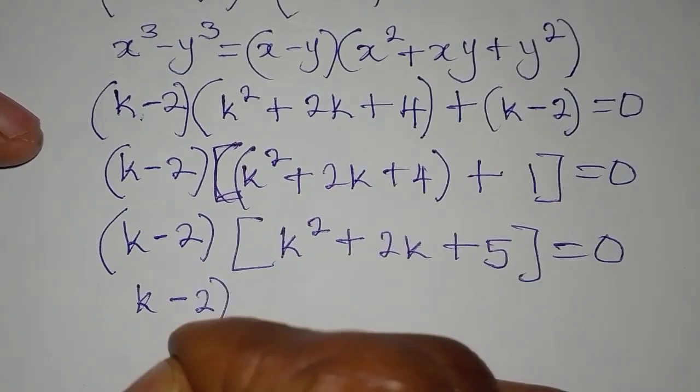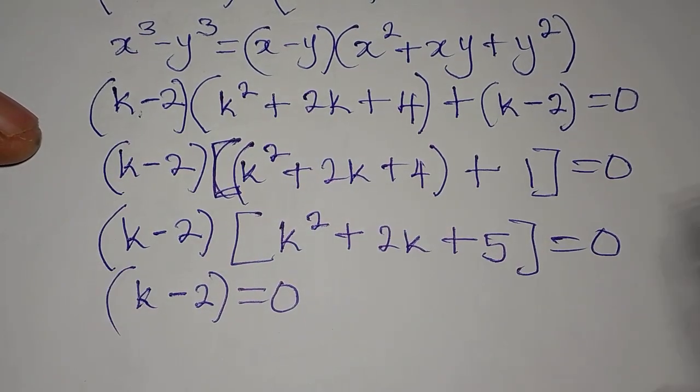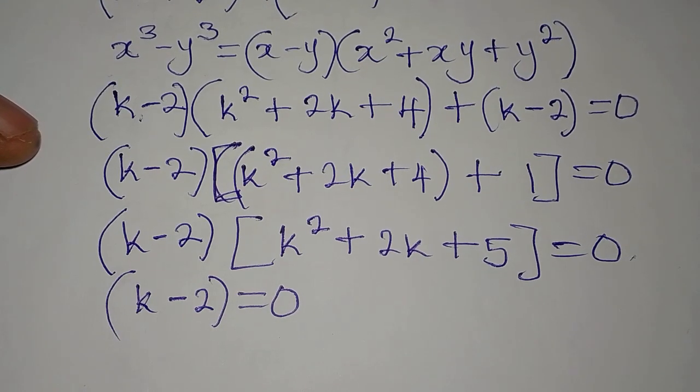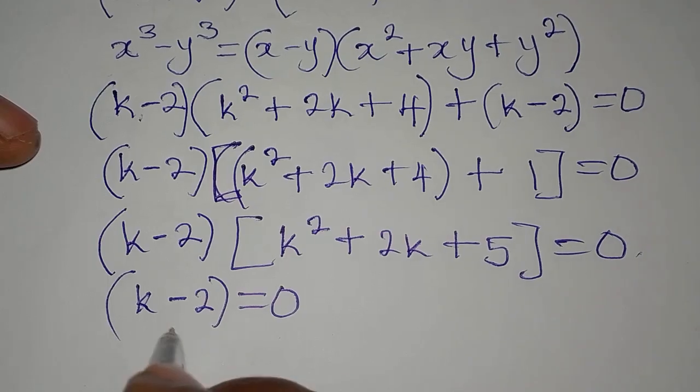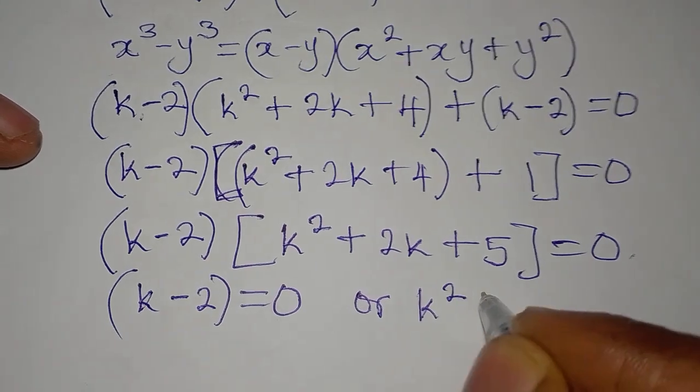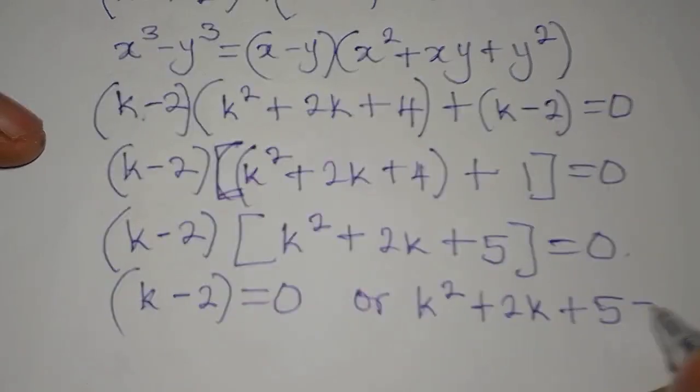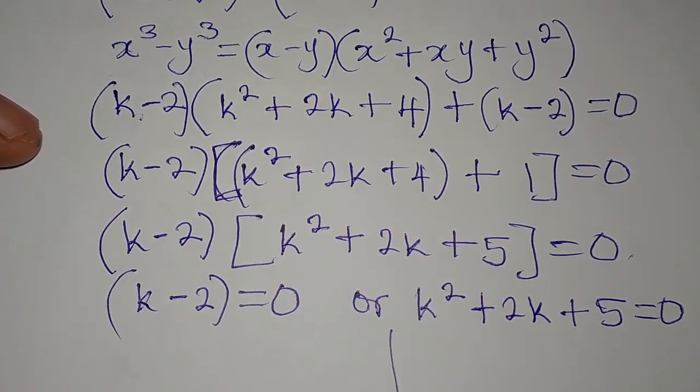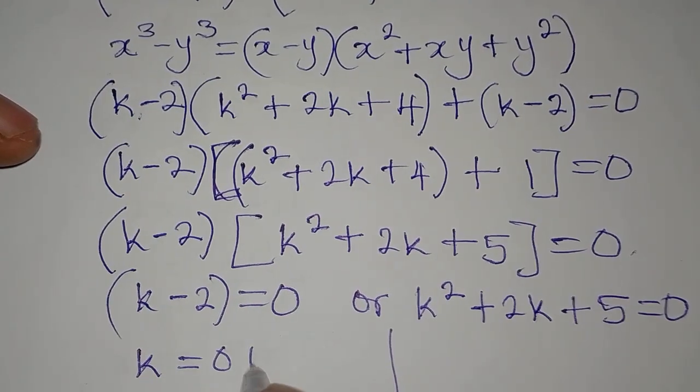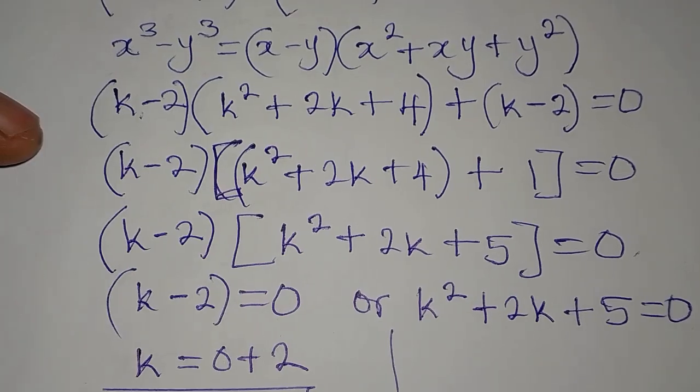Now, k minus 2 is there, it's equal to 0. If you like, you can remove the bracket. We're multiplying both of them now to get 0, and this is what we call 0 product rule. So it's either this is 0, or we have k squared plus 2k plus 5 equals 0. From here, our k is equal to 0 plus 2, and k is equal to 2. This is one of the solutions.